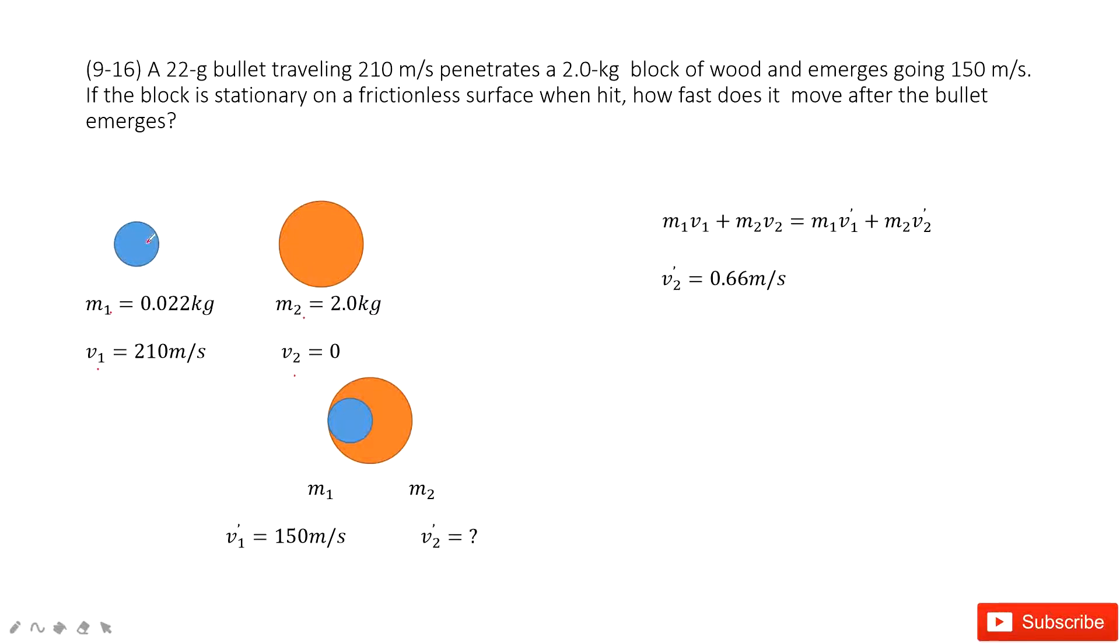It's stationary. Finally, this bullet gets in this box, right? It sticks together. And then the velocity at the moment this bullet just sticks with the box is given.